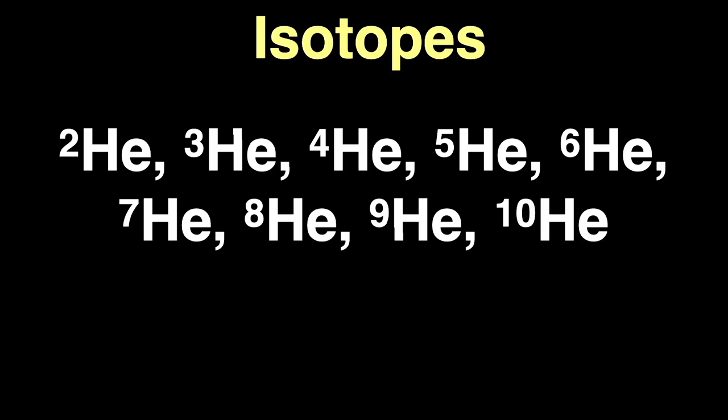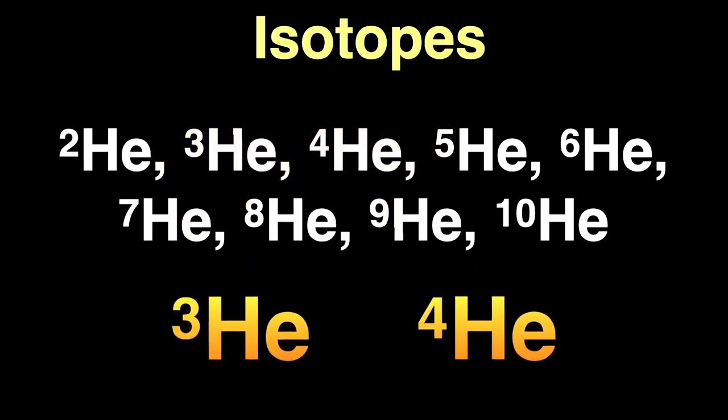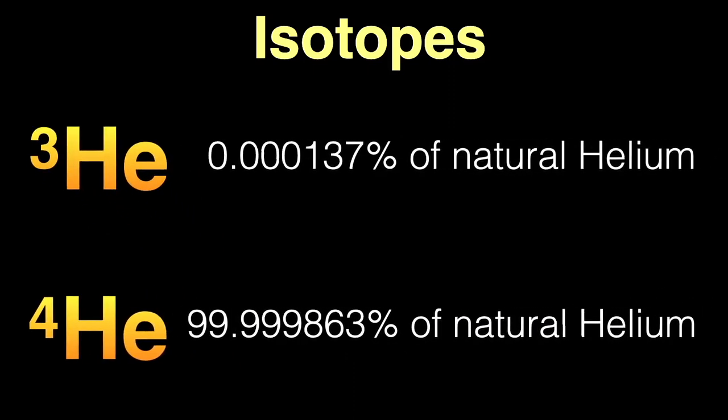There are nine known isotopes of helium, and of these nine, there are two stable, non-radioactive isotopes, helium-3 and helium-4. These two isotopes make up these percentages of naturally occurring helium in the universe, the vast majority being helium-4.